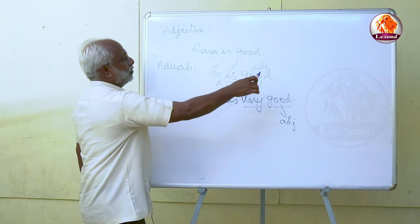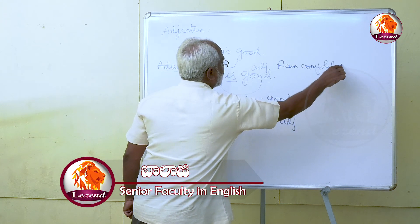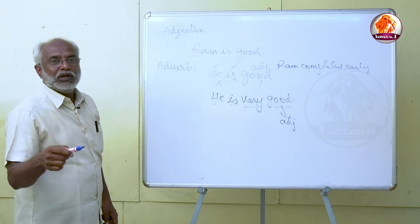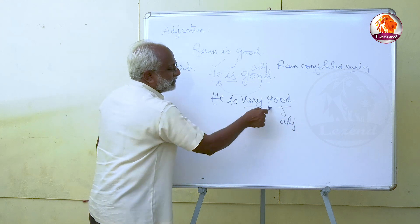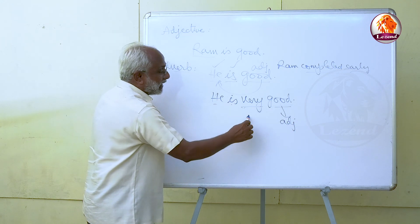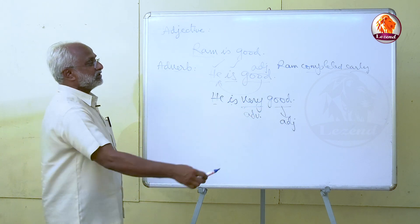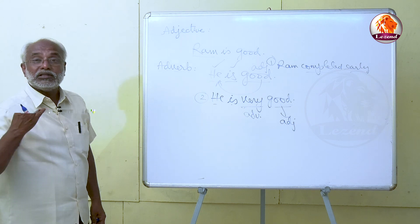In 'Ram completed early,' 'early' is an adverb adding something to the verb 'completed.' In 'He is very good,' 'very' is an adverb adding something to the adjective 'good.' This is one condition. The third role of an adverb is that it adds something to a verb, an adjective, or another adverb.